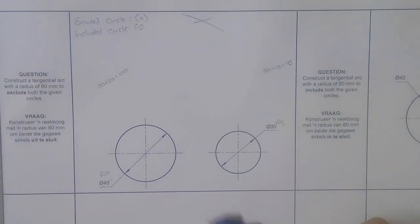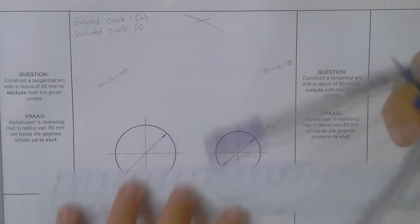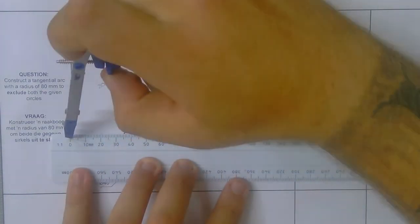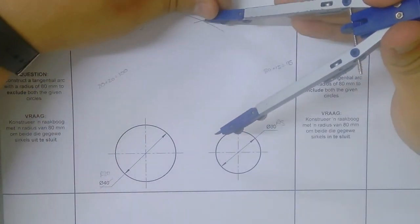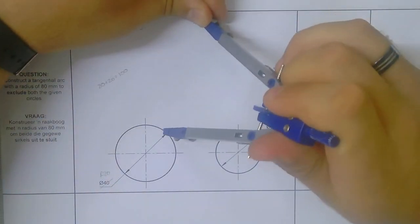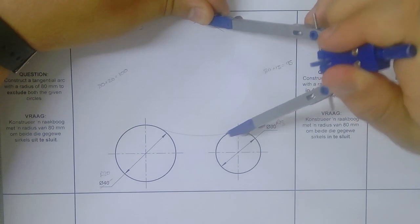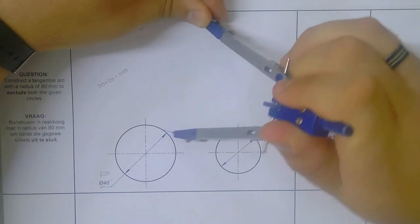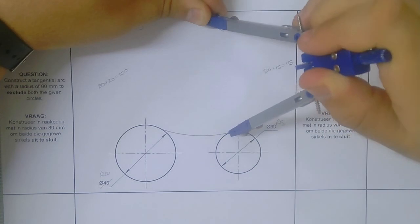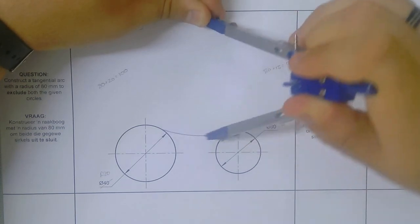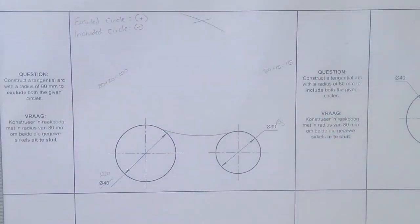So we take our compass and we set it to 80 millimeters. Put the metal points here on this cross and construct that tangential arc. And then you're done.